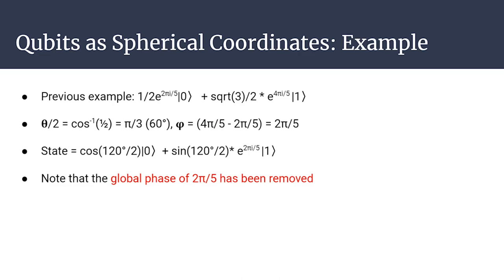Now let's convert a qubit from the state vector representation — just the coefficients of 0 and 1 — to the θ and φ representation, referred to as spherical coordinates or the polar representation. The advantage of spherical coordinates is that some operations are easier to conceptualize as angles. However, when actually applying an operator to a qubit, you want the state vector representation, because operators are matrices and multiplying a matrix by a vector is straightforward.